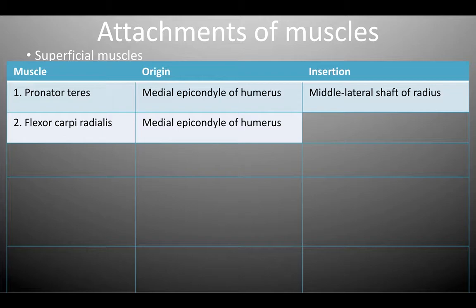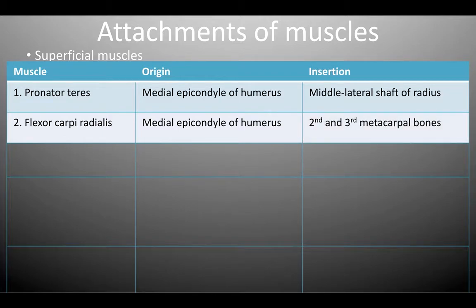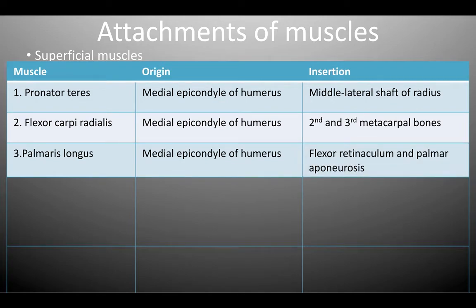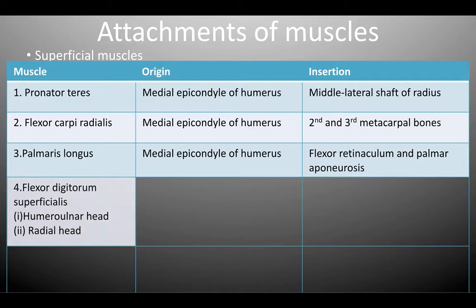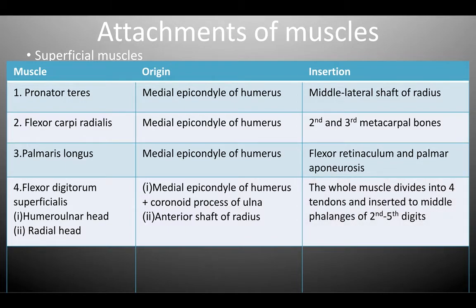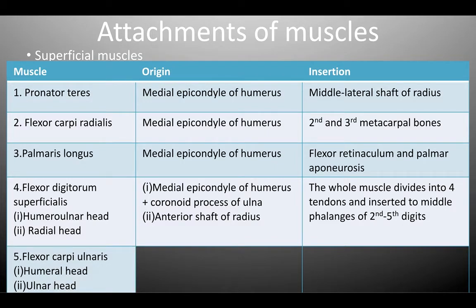The flexor carpi radialis originates from the medial epicondyle of the humerus, inserting into the second and third metacarpal bones. The palmaris longus also originates from the medial epicondyle of the humerus, inserting into the flexor retinaculum and the palmar aponeurosis. The flexor digitorum superficialis has two heads: the humeral-ulnar head originating from the medial epicondyle of the humerus and the coronoid process of the ulna, and the radial head from the anterior shaft of the radius. This muscle divides into four tendons inserting into the middle phalanges of the second to fifth digits.